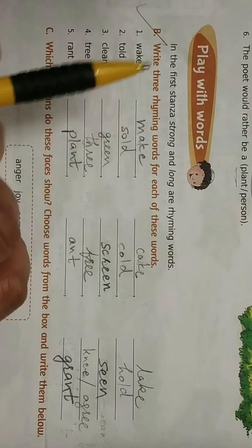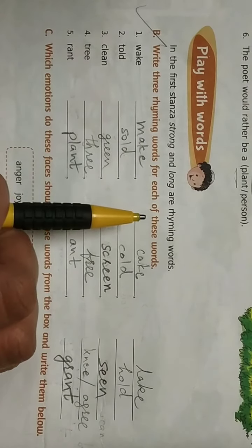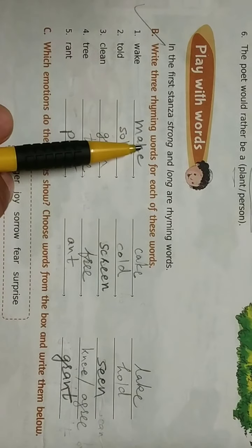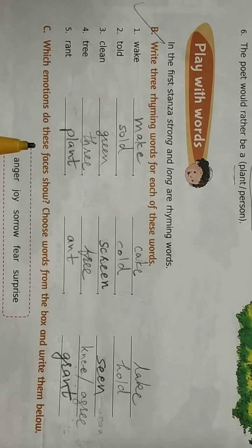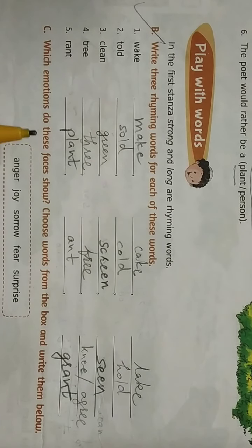Your B question is write three rhyming words for each of these words. Now what do you mean by rhyming words? Rhyming words are two or more words that have the same or similar ending sound. For example, goat, boat, coat, house, mouse.